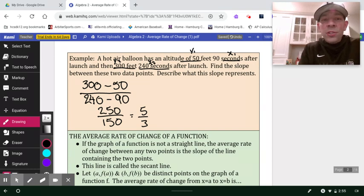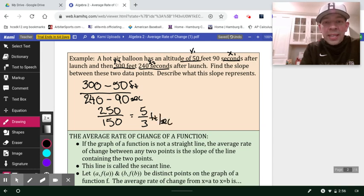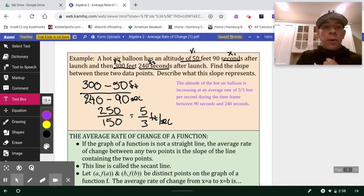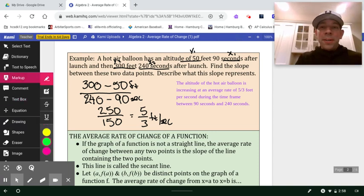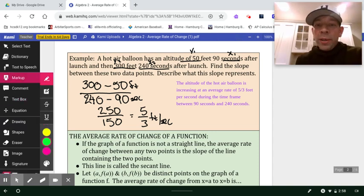Now if we get into these units, remember the 300 minus the 50, those are measured in feet, and the 240 minus 90, those are measured in seconds. So this is five-thirds feet per second. And now shifting gears here, we want to describe what this slope means within the context.